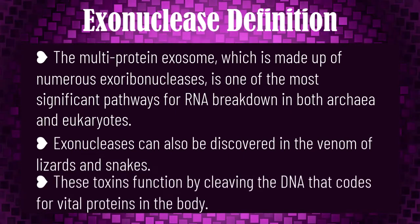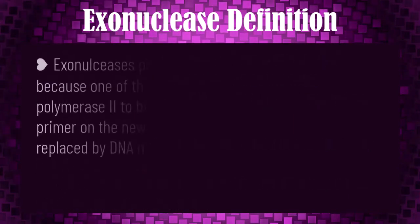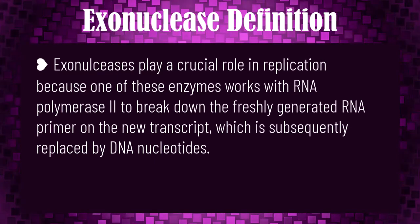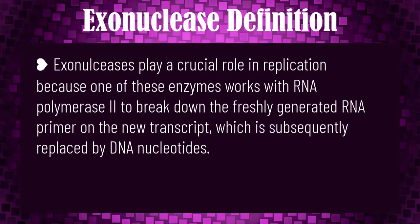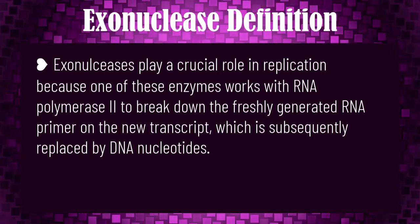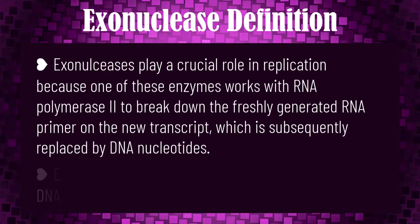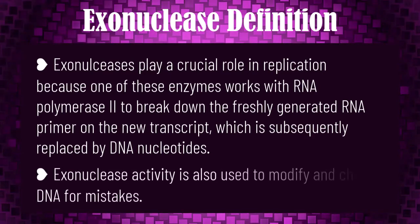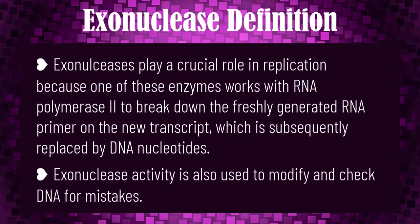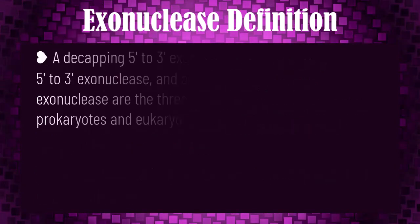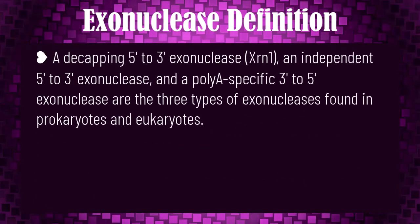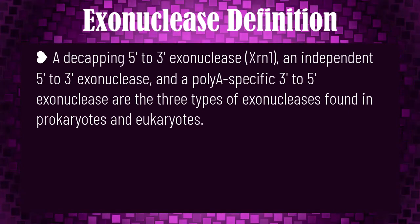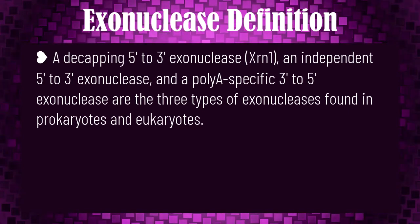Exonucleases play a crucial role in replication because one of these enzymes works with RNA polymerase to break down the freshly generated RNA primer on a new transcript, which is subsequently replaced by DNA nucleotides. Exonuclease activity is also used to modify and check DNA for mistakes. A decapping 5-prime to 3-prime exonuclease XRN1, an independent 5-prime to 3-prime exonuclease, and a poly-A specific 3-prime to 5-prime exonuclease are the three types of exonucleases found in prokaryotes and eukaryotes.